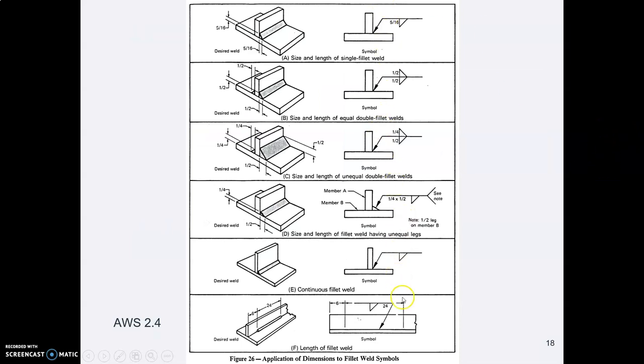Here are some examples out of the AWS manual, illustrating if you have such and such a situation, how do you write that. Here's an interesting one: half inch weld on the arrow side, so underneath the line. Quarter inch weld on the far side, so above the line.